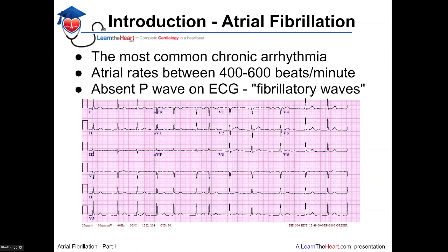Atrial fibrillation is the most common chronic arrhythmia. Some reports estimate that approximately 2 to 3 million people in the United States have atrial fibrillation. Atrial rates between 400 and 600 beats per minute are present in patients with atrial fibrillation.